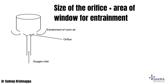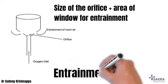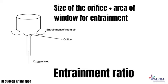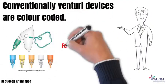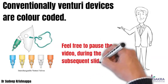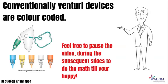The size of the orifice and the area available for the entrainment of air together determine something called the entrainment ratio. This entrainment ratio is fixed for a given venturi device. Conventionally, venturi masks come with a mask and about five or six different color-coded venturi devices. Each device will have its own recommended flow rate of oxygen and a fixed entrainment ratio, and together these determine a particular FiO2.